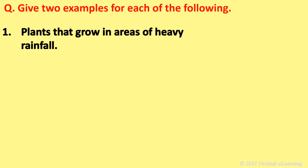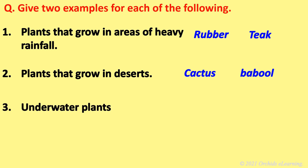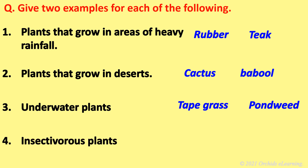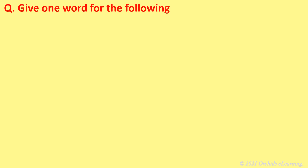Plants and their benefits: Plants that grow in areas of heavy rainfall. Plants that grow in desert: cactus, babool. Underwater plants: tape grass, pondweed. Insectivorous plants: Venus flytrap, pitcher plant.